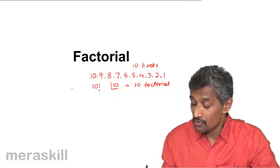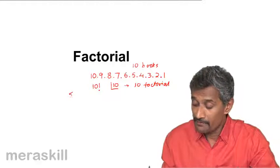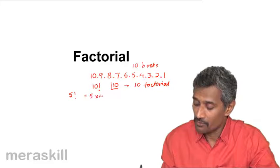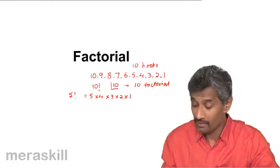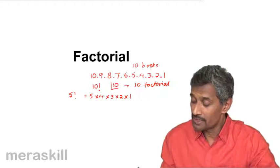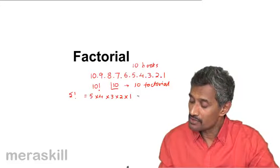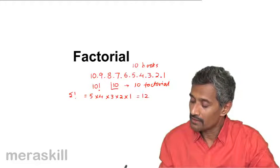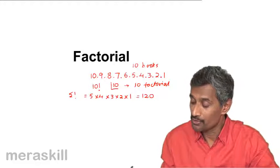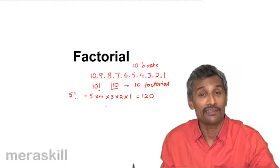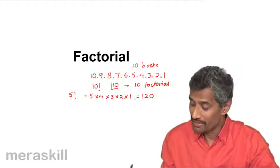So suppose you have 5 factorial — it would be 5 × 4 × 3 × 2 × 1, which is 120. So the value of 5 factorial is 120.